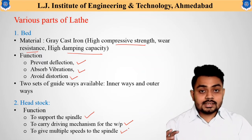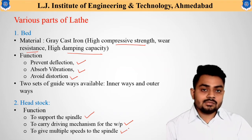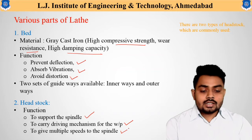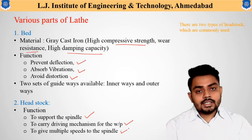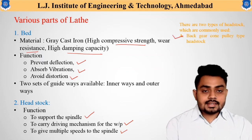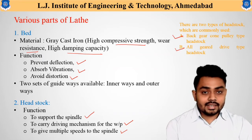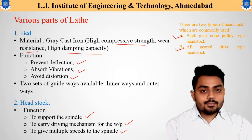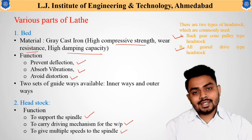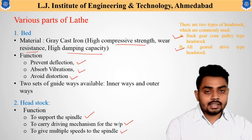The headstock consists of two main mechanisms, and based on availability there are two types of arrangements. The two commonly used headstocks are: first, the back gear cone pulley type headstock, and second, the all geared type headstock. The detailed arrangement of these two types will be understood in our further lectures.